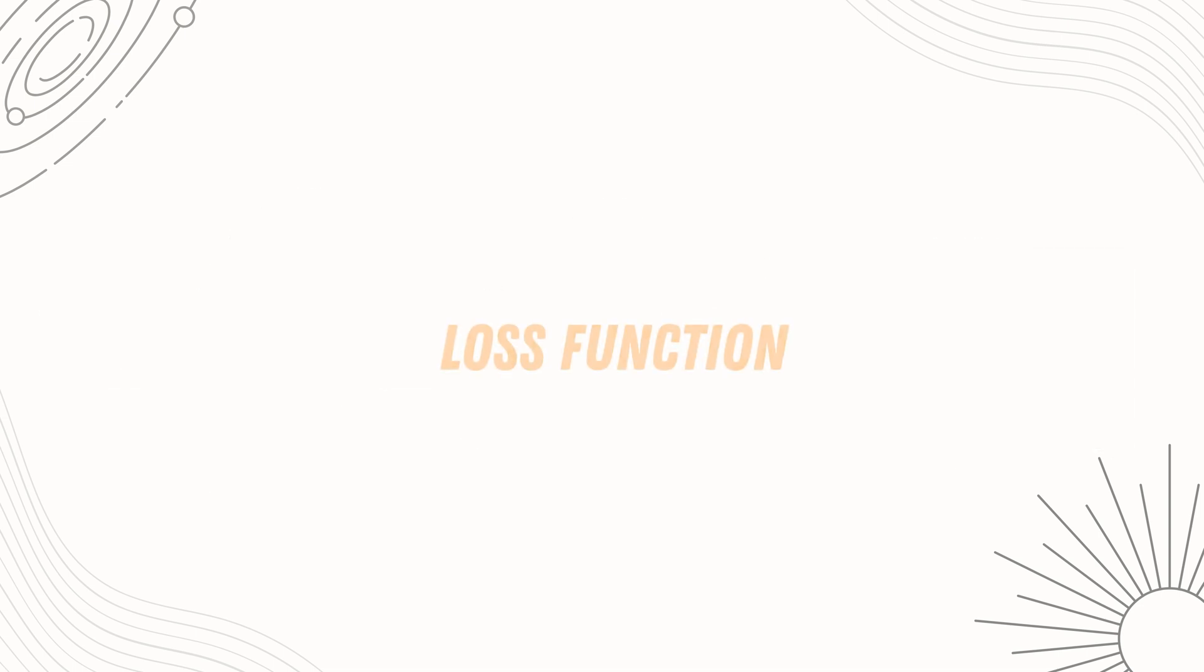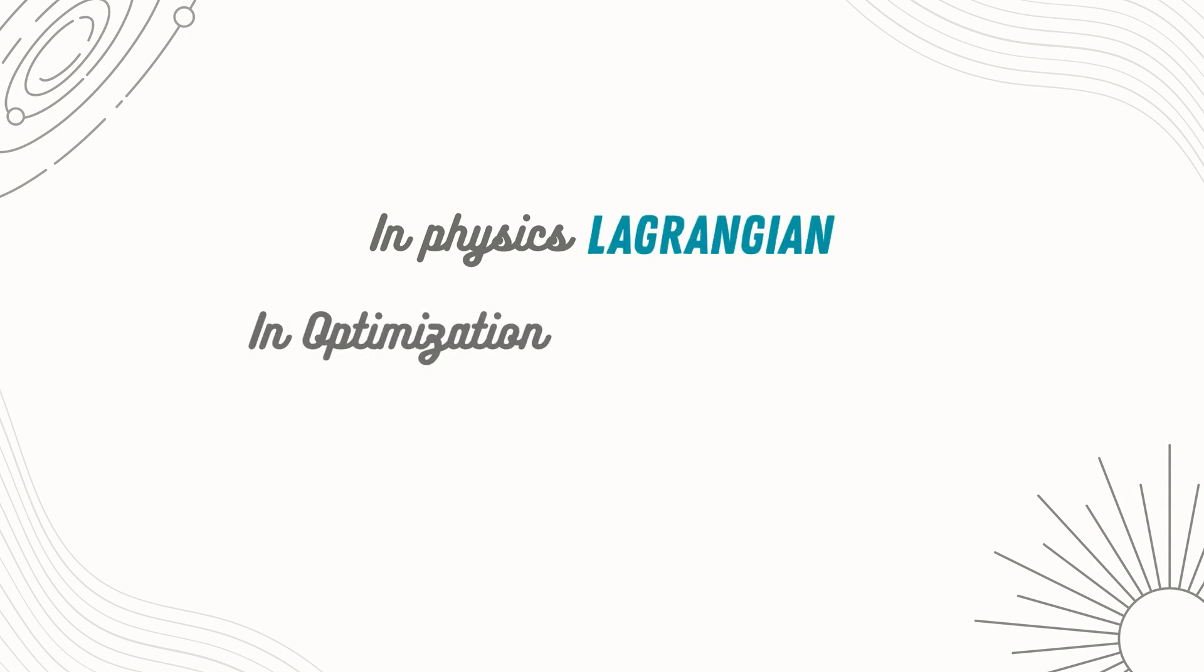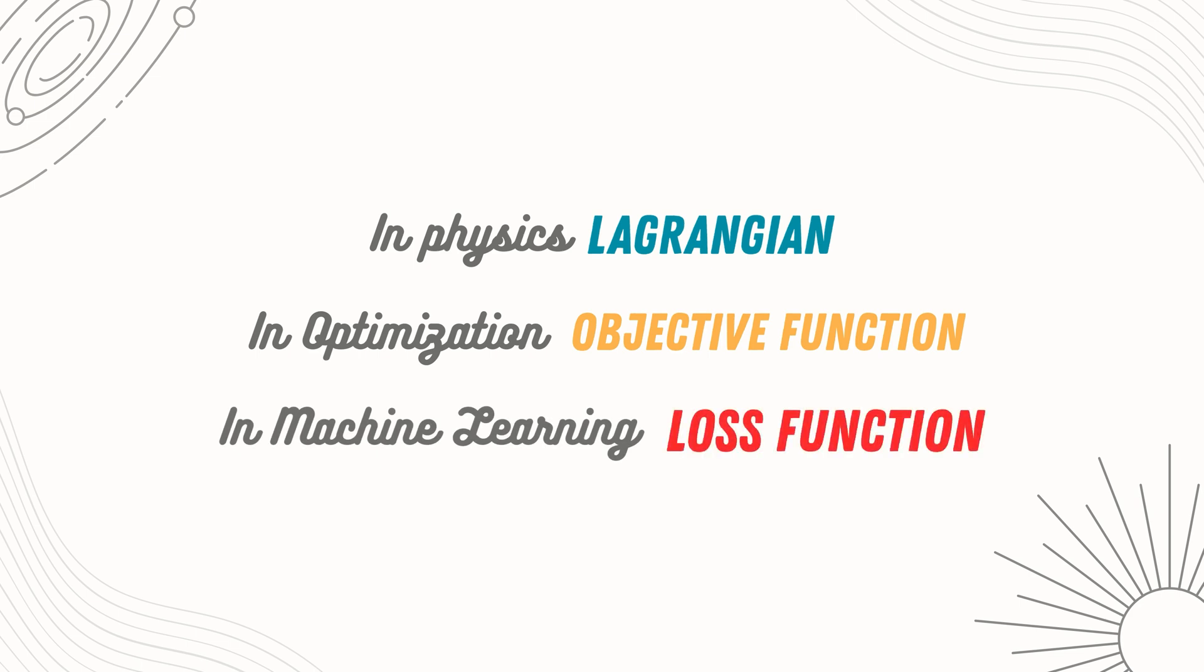First, and the most common function you'll find in literature is the loss function. It is known by many names. In physics, this is called the Lagrangian. In optimization, it's the objective function. But in machine learning literature, it is widely referred to as the loss function.